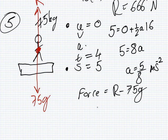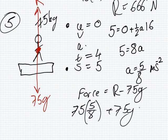So, the R. The force you know the form of the forces. What is it? MA. And what's the M? The mass, which is 75. And the A? 5 over 8. So 75 times 5 over 8 plus 75 G equals R.